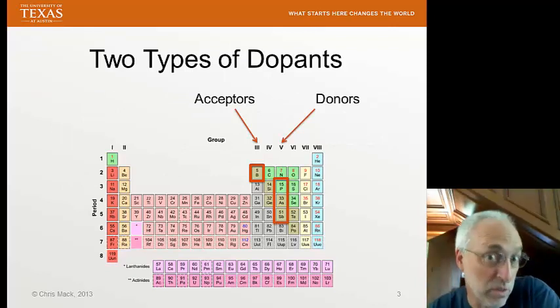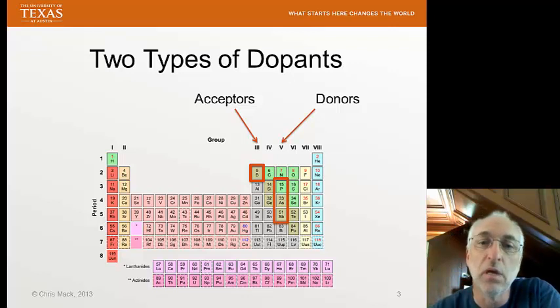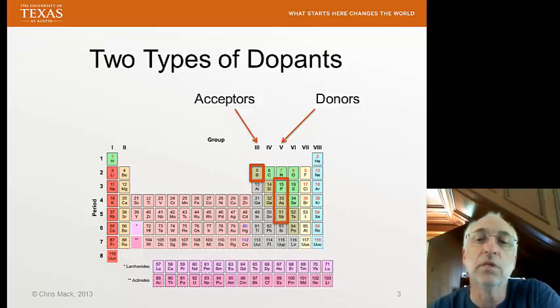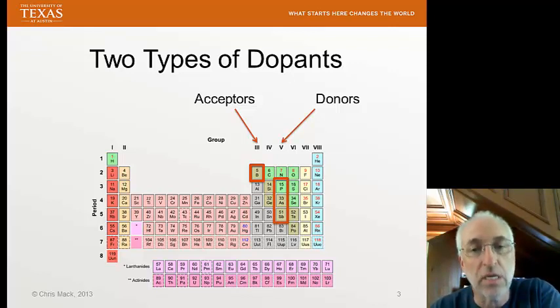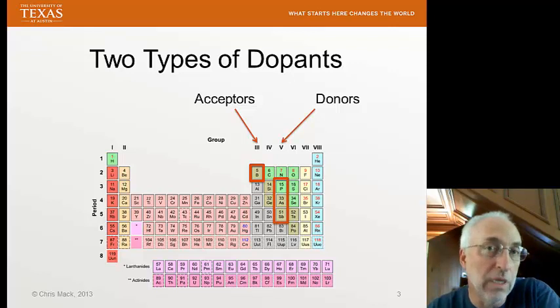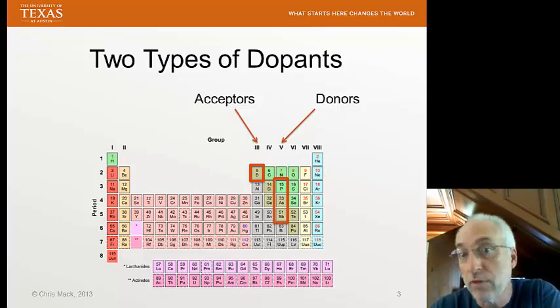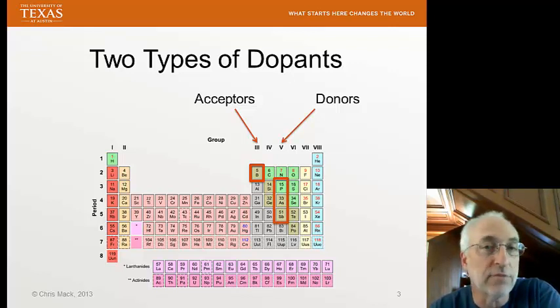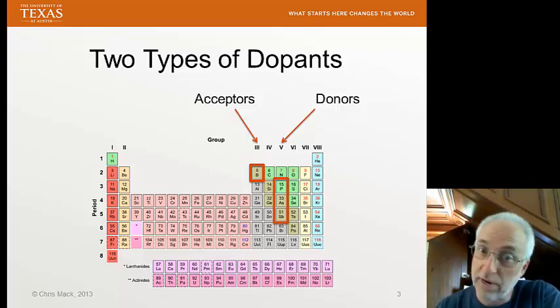Well, what is this doping? We have two kinds of dopants. We call them acceptors and donors. We'll see those names come about as we look at the operation of these impurities within the crystal structure. Acceptors come from the group 3 column of the periodic table, and generally that means boron. Sometimes we use gallium, but in general we're always using boron for our acceptors. For donors, we're looking at the group 5 column in the periodic table, and that is phosphorus, arsenic, and antimony. It's very important that we're using group 3 or group 5, as we'll see.